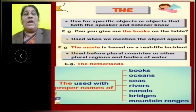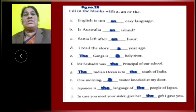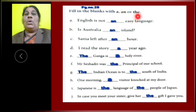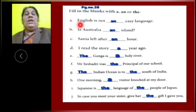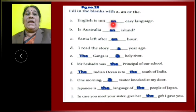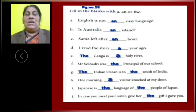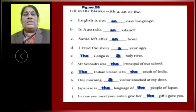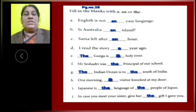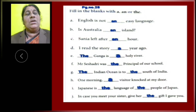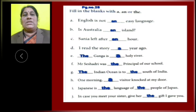Now, let us do the exercise. Fill in the blanks with A, AN, or THE. A: English is not an easy language. Here, the word easy started with a vowel letter, so we have to use article AN. B: East Australia is an island. Here, the word island is also a vowel letter word, so we have to use article AN.